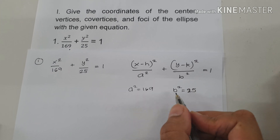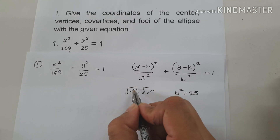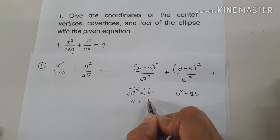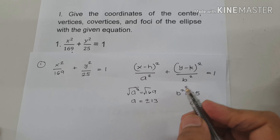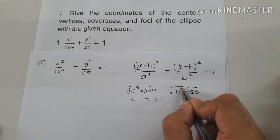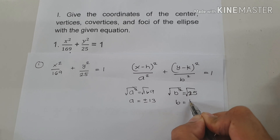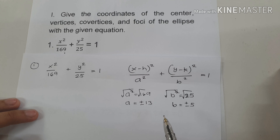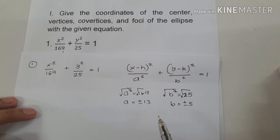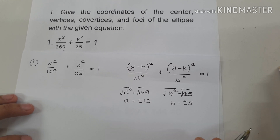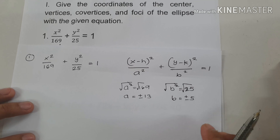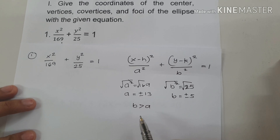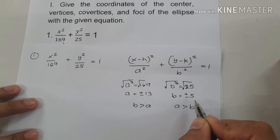To find the value of a and b, let us extract the roots to cancel the exponent. So a equals positive and negative 13, and b is positive and negative 5. Always remember: whenever we have an ellipse which is vertically oriented, b is greater than a. If our ellipse is horizontally oriented, a is greater than b.